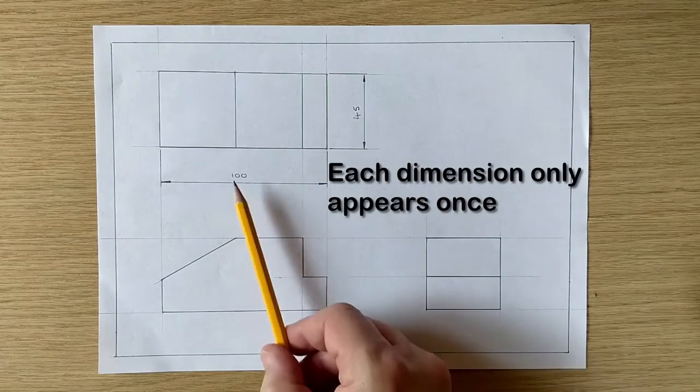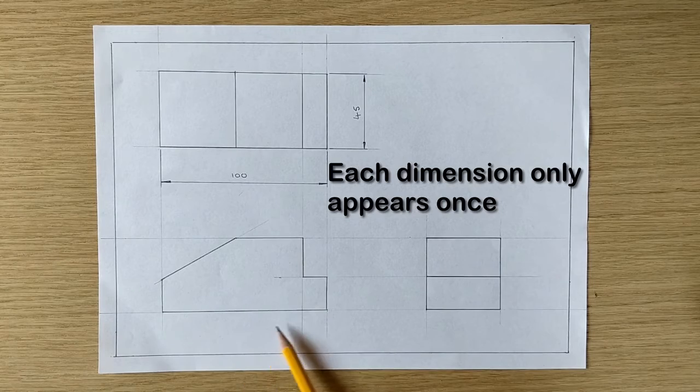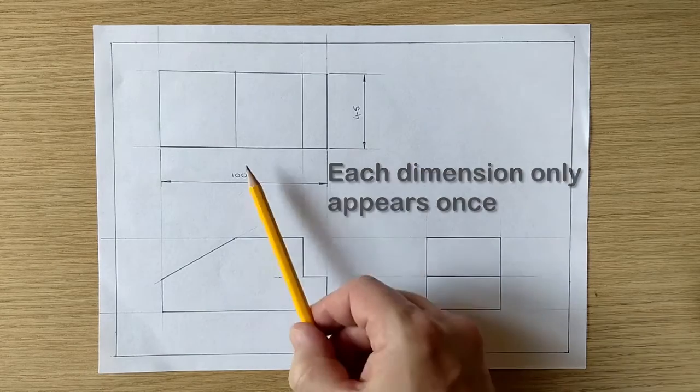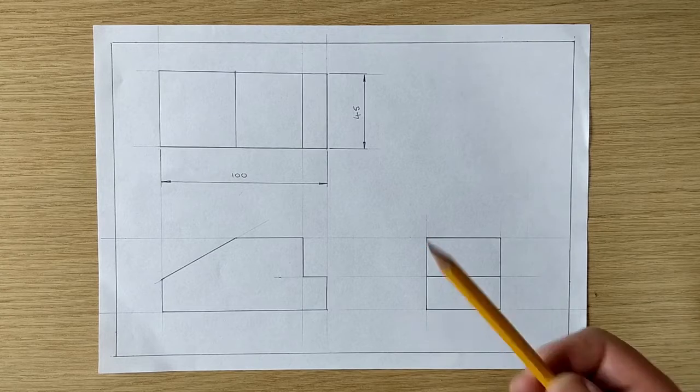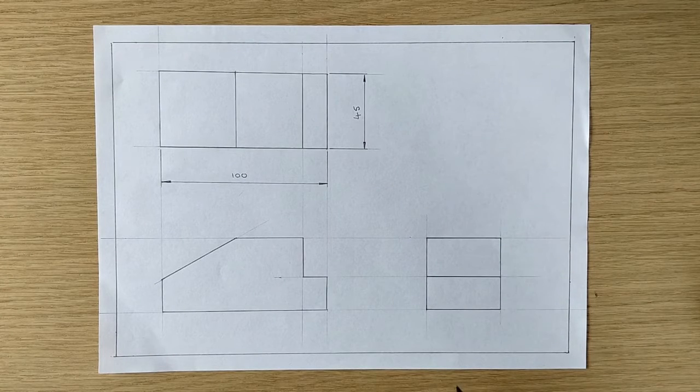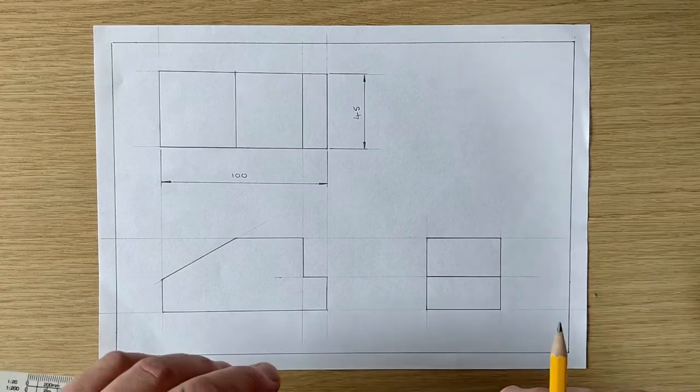Each dimension should only appear once. I don't have to put that 100 down here, I've done it there, that should be enough. So I'm just going to add the measurements that I gave you last time and the drawing will then be fully dimensioned.